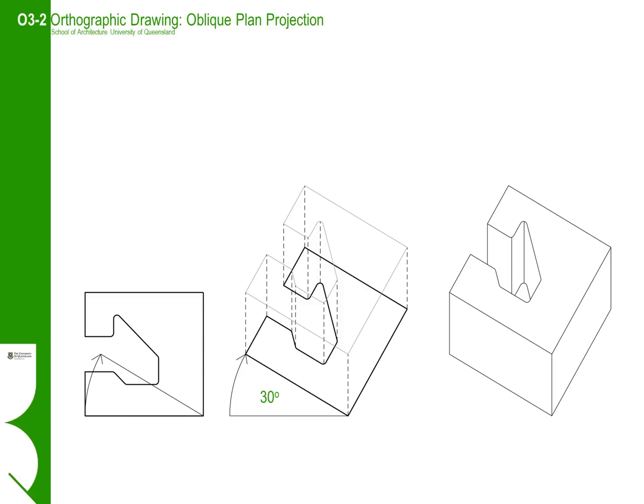Once the plan is set up at the correct angle, start projecting vertical lines from the plan to create the z-axis or third dimension. Project at the correct height according to the scale of the plan and the object being represented. Then finish by projecting the plan to the top part of the three-dimensional view and then rub out the line work that is hidden from view.